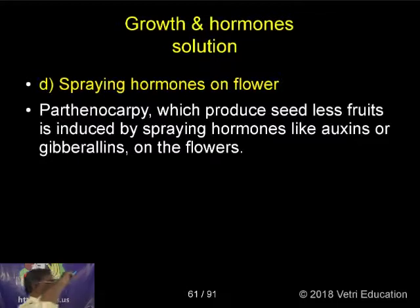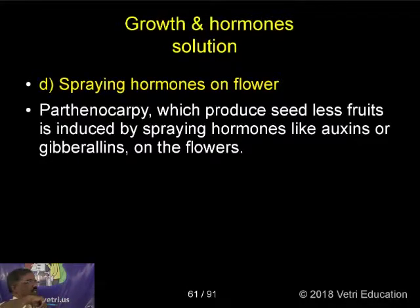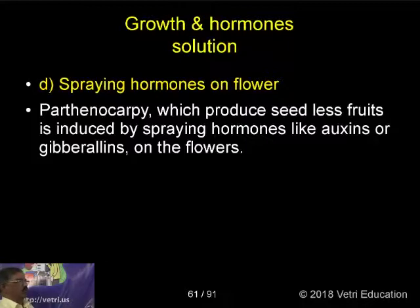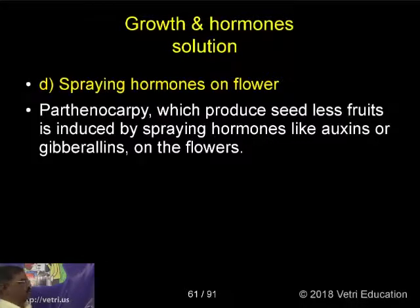Parthenocarpy, which produces seedless fruits, is induced by spraying hormones like auxins or gibberellins on the flowers.